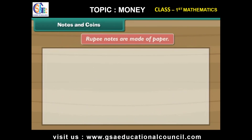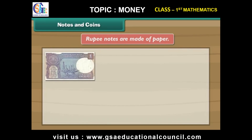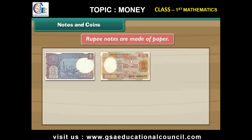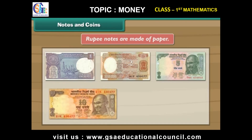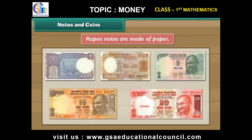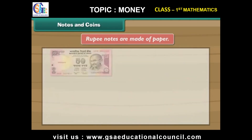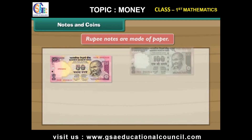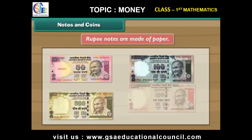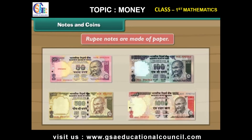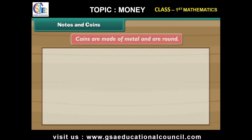Rupee notes are made of paper. There are 1, 2, 5, 10, 20, 50, 100, 500 and 1000 rupee notes. Coins are made of metal and are round.